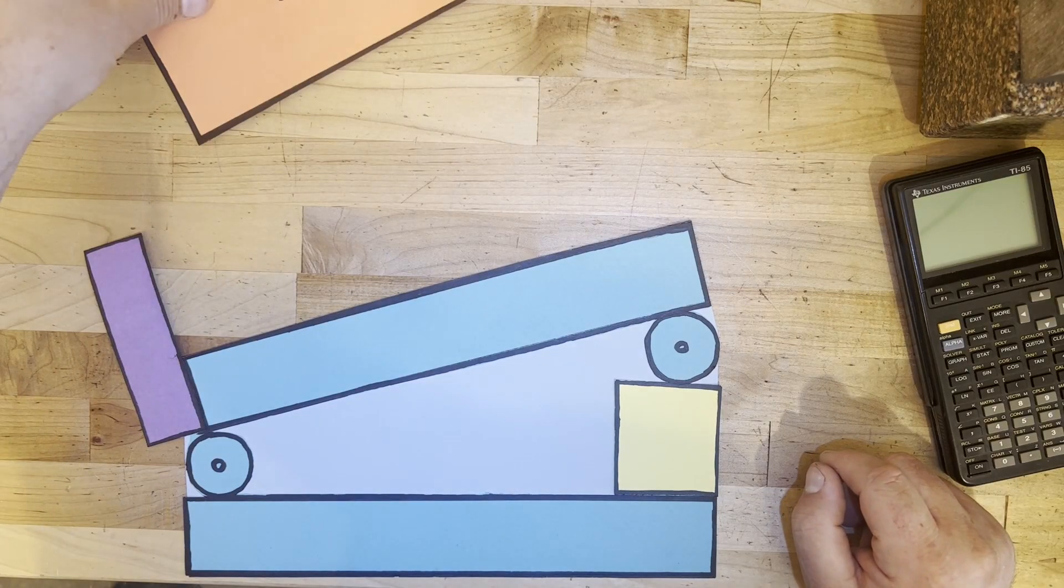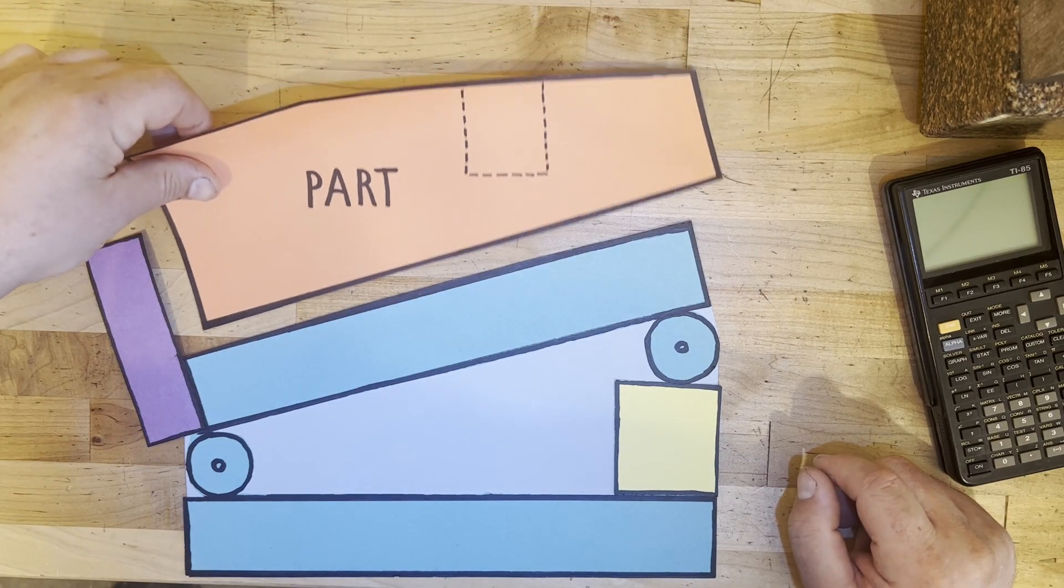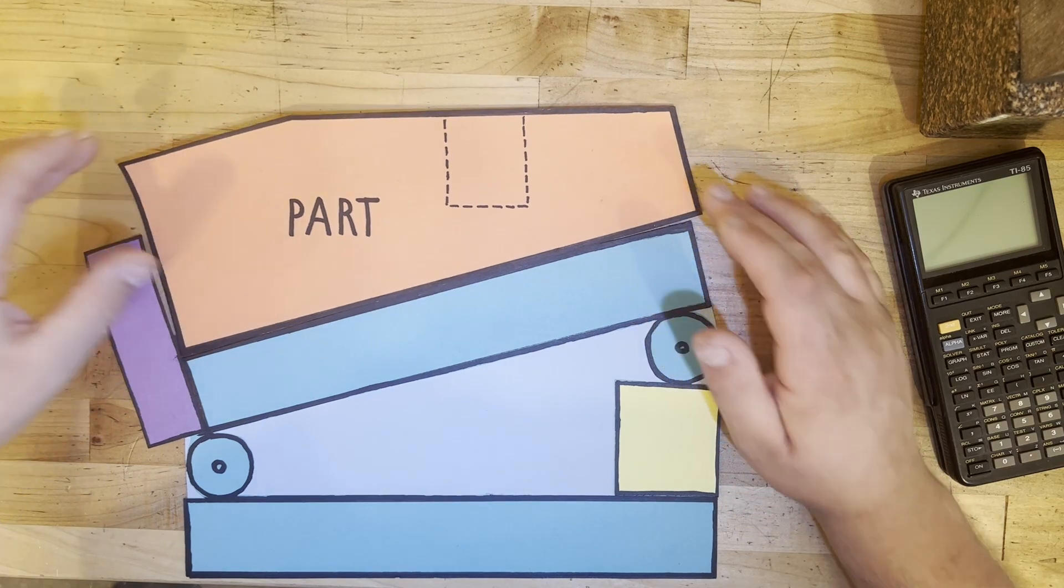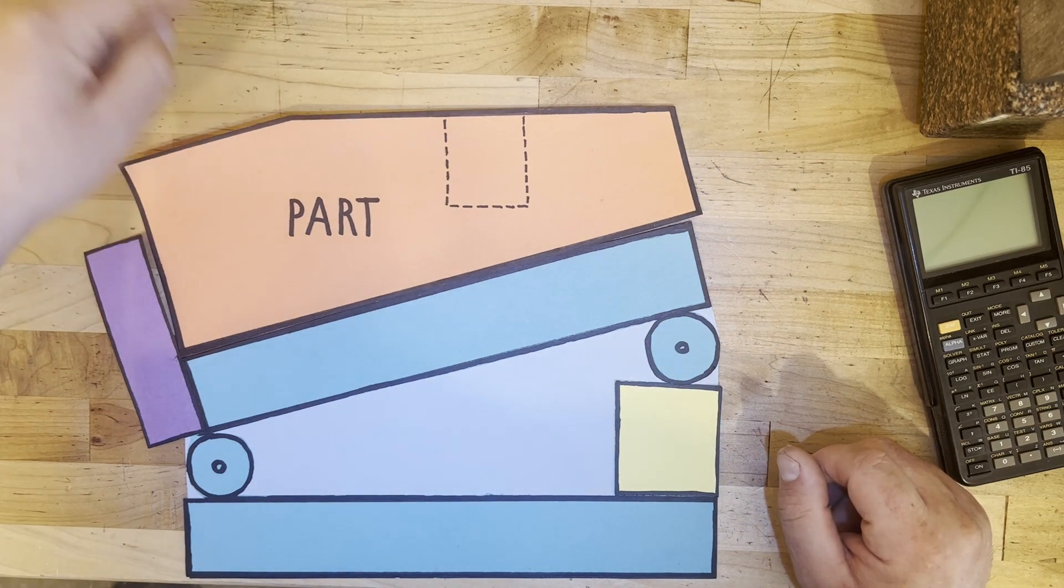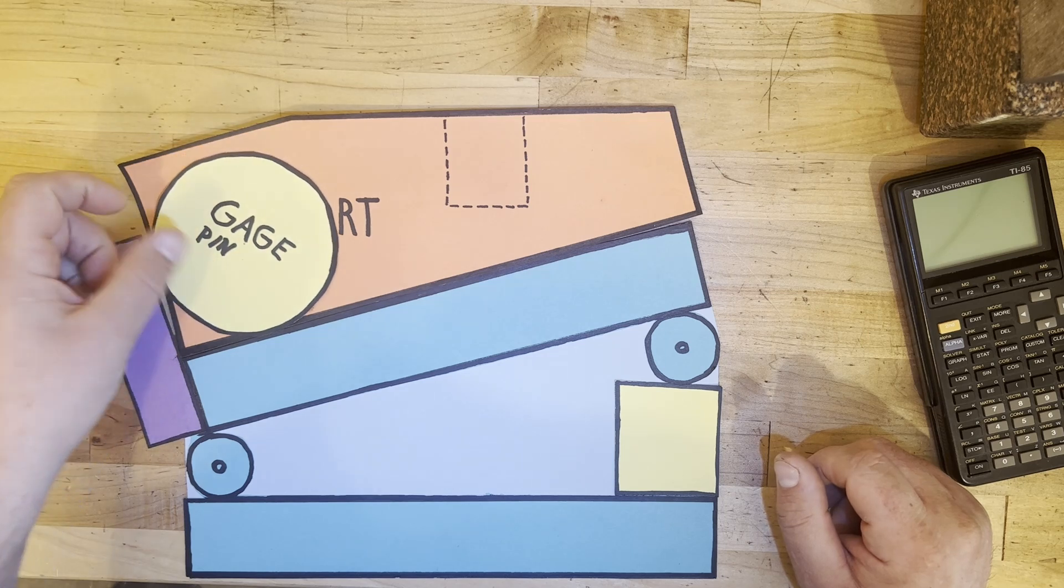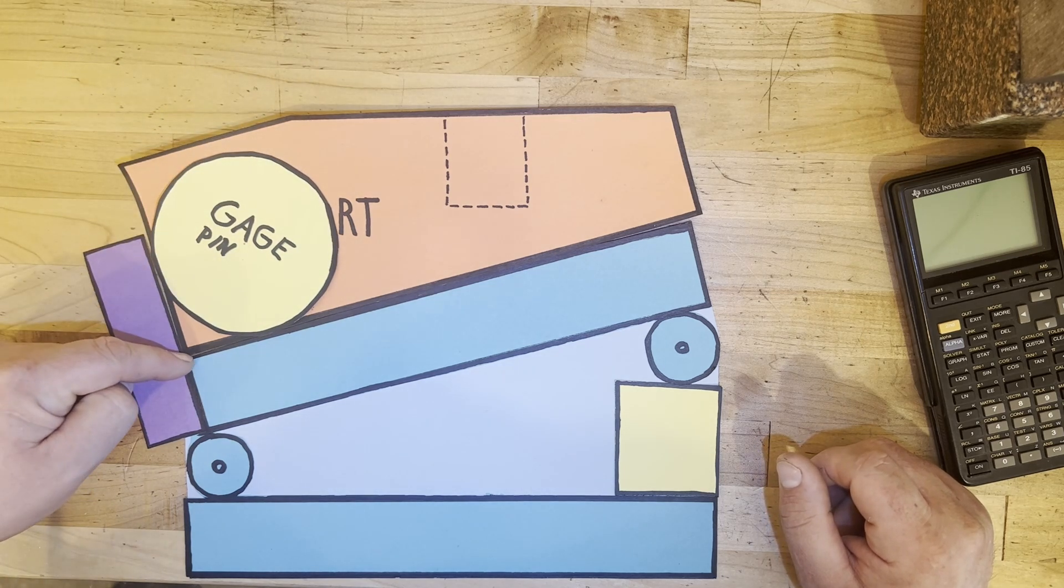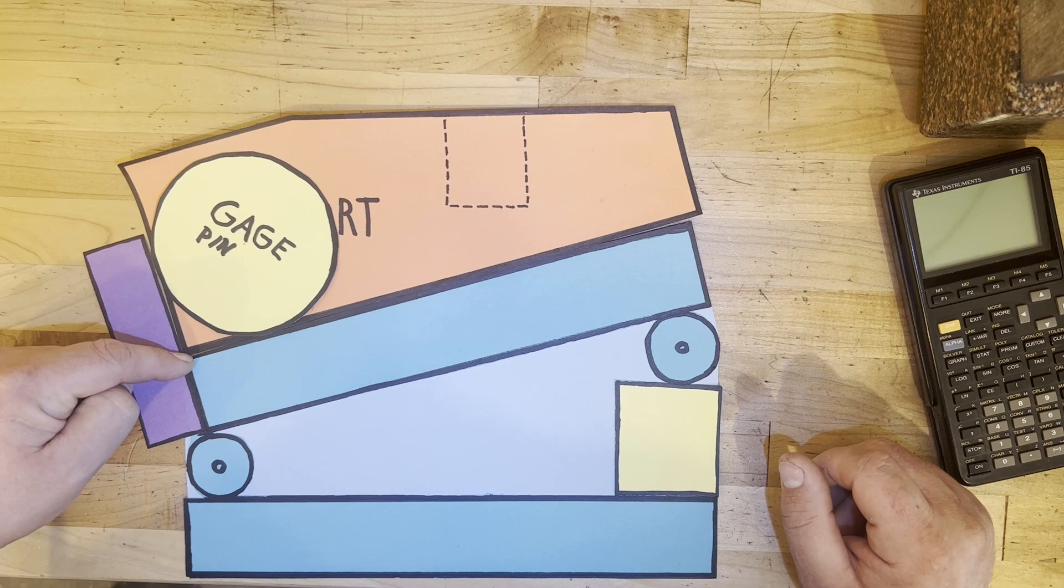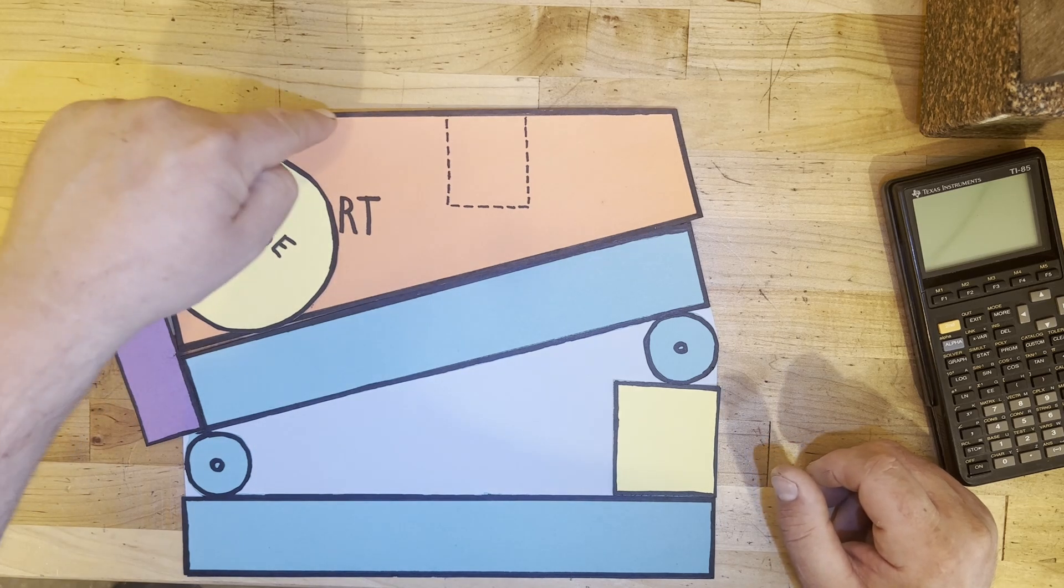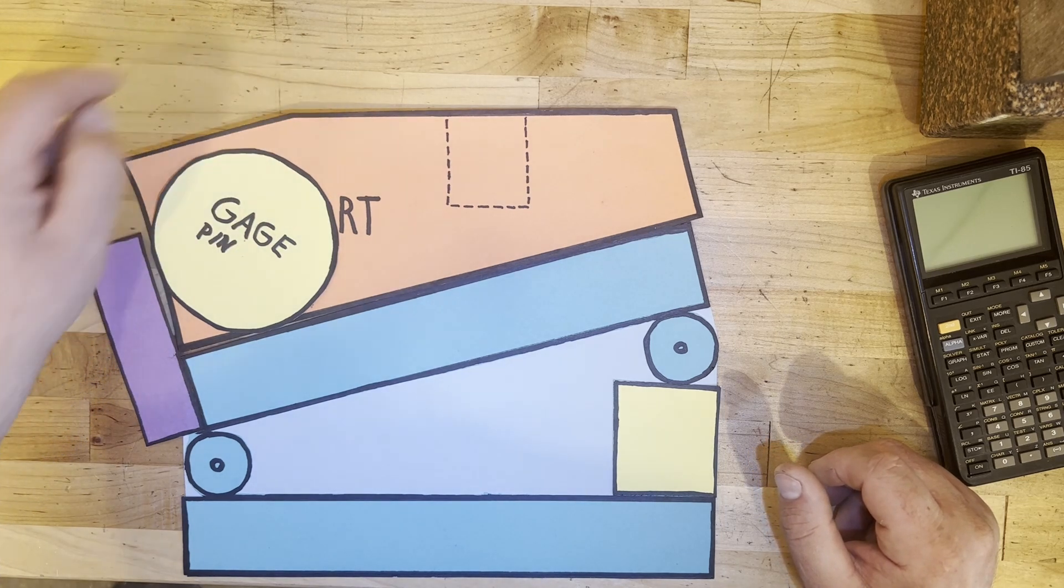A few videos ago I mentioned how if you're doing angle work on a sine chuck, you can use a gauge pin to determine the distance from the top of the pin to the corner of your sine chuck, and then ultimately how much stock is remaining on your angled feature.